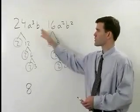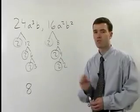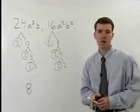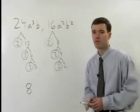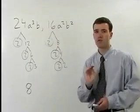Now let's look at the variables. Remember that the variable must appear in both monomials in order for it to qualify for the greatest common factor. A and B are in both, so they'll both qualify.